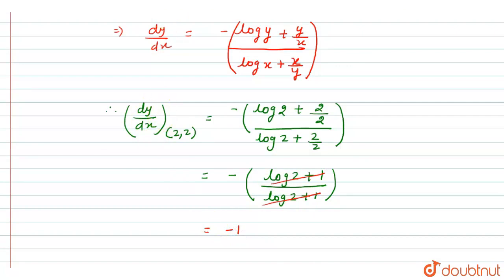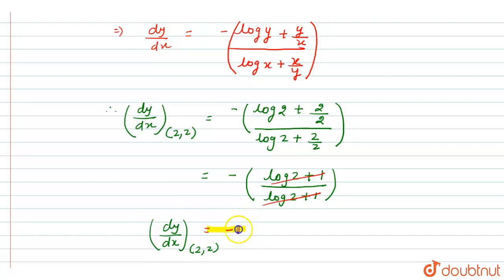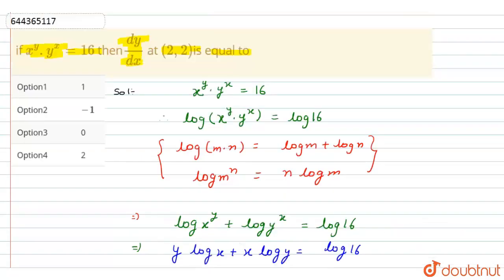So the answer is dy/dx at (2, 2) is equal to minus 1. Checking the options, option second is the right answer.